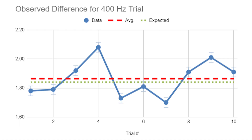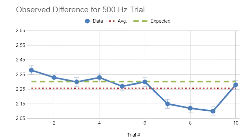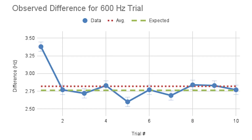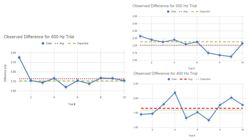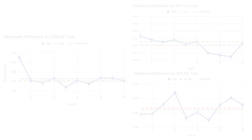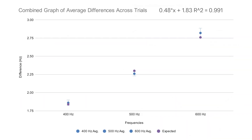Here is a graph of the results with the 400, 500, and 600 Hz trials respectively. As you can see, there is a clear Doppler shift within our data. The main graph includes all of the frequencies with the expected values next to each other, and there is definitely a noticeable Doppler shift in the data with a very high correlation value.